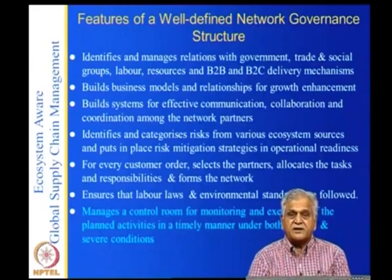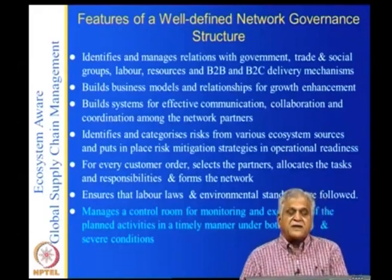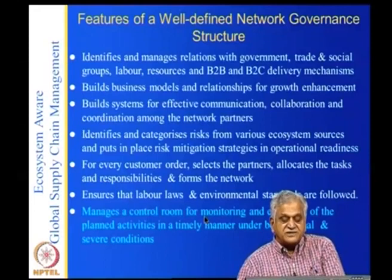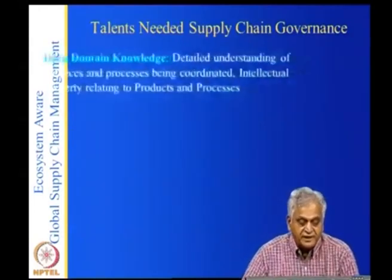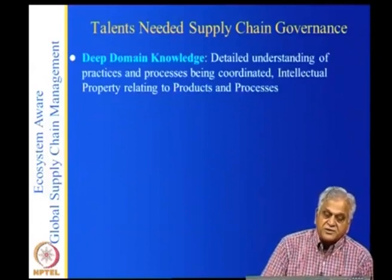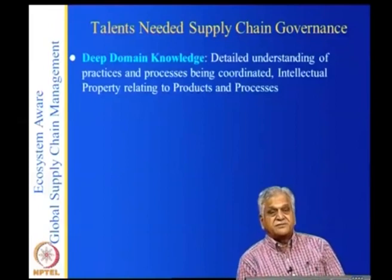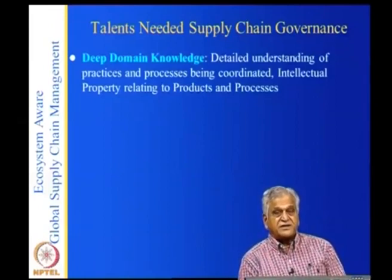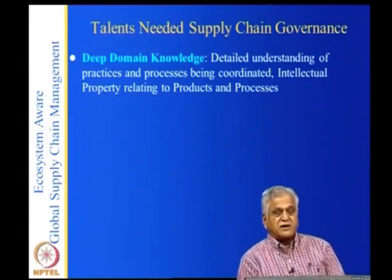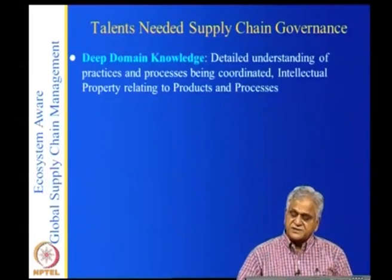Under normal conditions you check product quality; under abnormal conditions you expedite and handle exceptions. These are the features of a network governance model. The required talents include deep domain knowledge, because the network is globally distributed and technology-enabled. Whatever the vertical — oil and gas, steel, auto, or electronics — you need deep understanding of processes and intellectual property relating to products and processes.